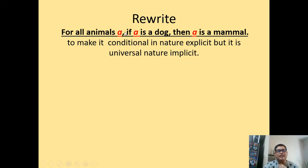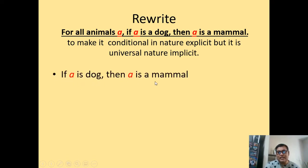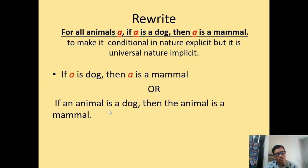If you're going to rewrite 'for all animals a, if a is a dog, then a is a mammal' to make it conditional in nature explicitly but universal implicitly, it becomes: 'if a is a dog, then a is a mammal.' The 'for all animals' part is removed, but it is still universal implicitly. You can also say 'if an animal is a dog, then the animal is a mammal.' There are several ways to express statements in mathematics.